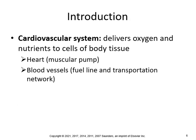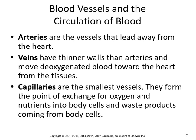The cardiovascular system delivers oxygen and nutrients to cells of body tissue. The heart is the muscular pump and the blood vessels are the fuel line and transportation network. There are three types of blood vessels: arteries, which lead away from the heart; veins, which have thinner walls and move deoxygenated blood toward the heart; and capillaries, the smallest vessels that form the point of exchange for oxygen, nutrients, and waste products.